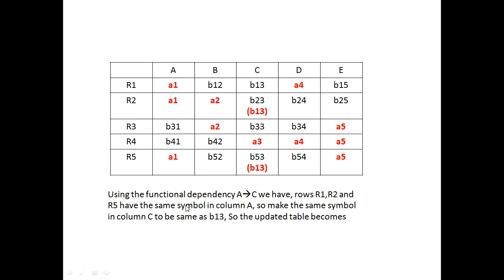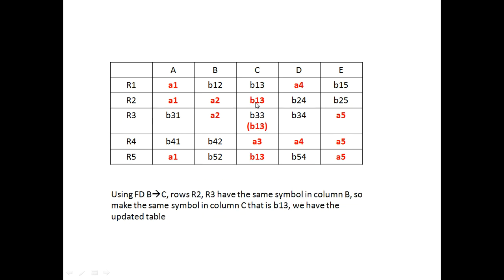Now I check using functional dependency A→C. Rows R1, R2, and R5 have the same symbol a1 in column A. So we make the same symbol in column C: we change b13 in R1 and R5 to b13 (matching). We mark these updates in red. Next, using FD B→C: rows R2 and R3 have the same symbol a2 in column B, so we update b33 to b13 in column C.